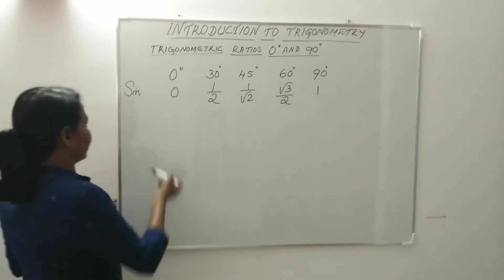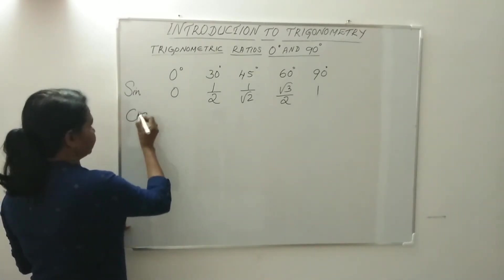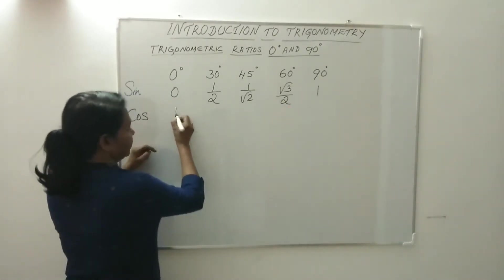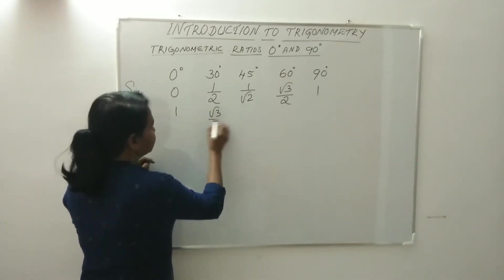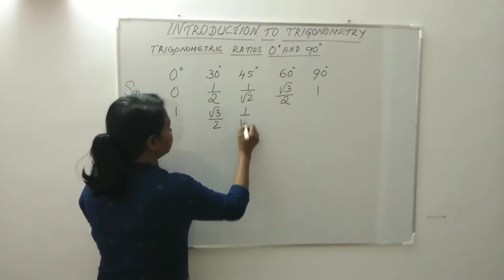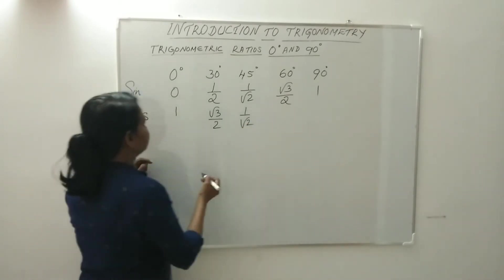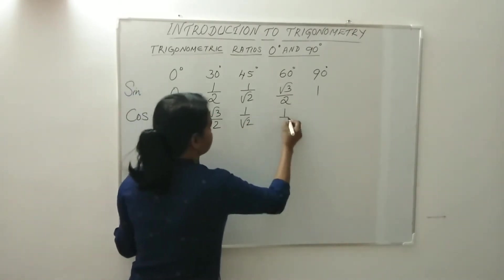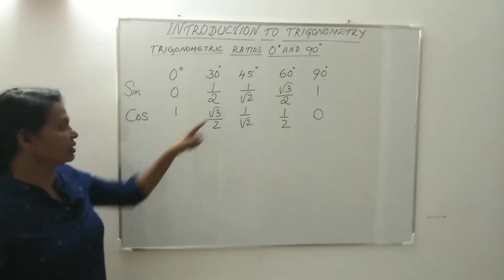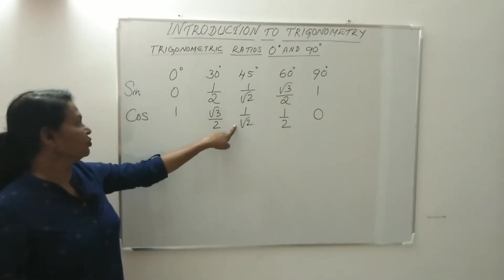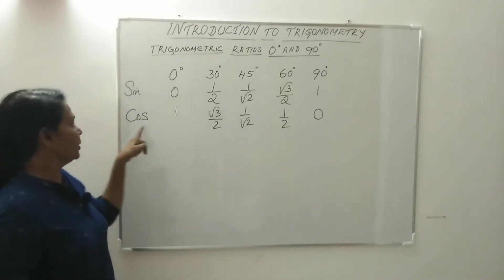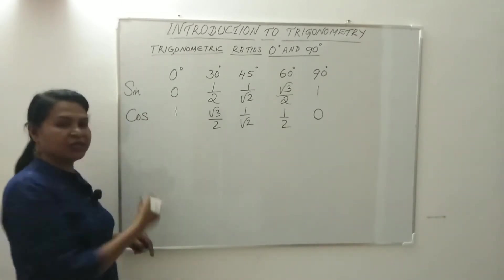The sine values in reverse order give you the cosine values. Cos 0 is 1, cos 30 is root 3 by 2, cos 45 is 1 by root 2, cos 60 is 1 by 2, and cos 90 is 0. This is the same ratio — for 45 degrees, sine and cosine are the same ratio. Sin divided by cos gives tan.